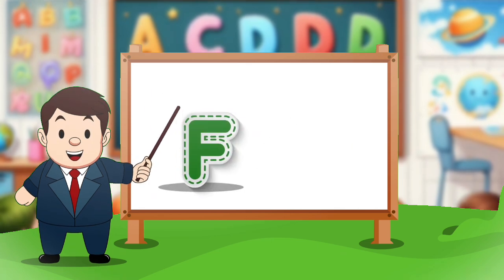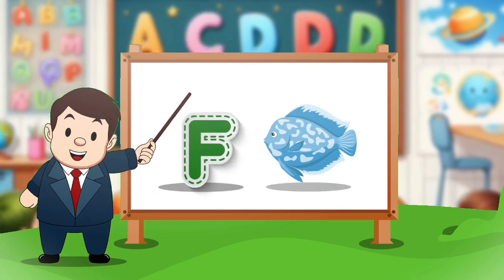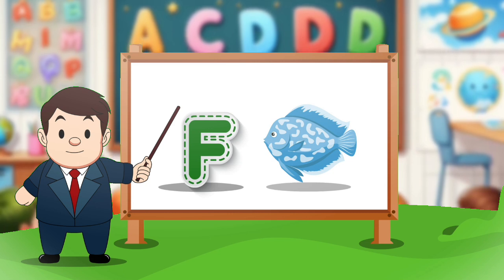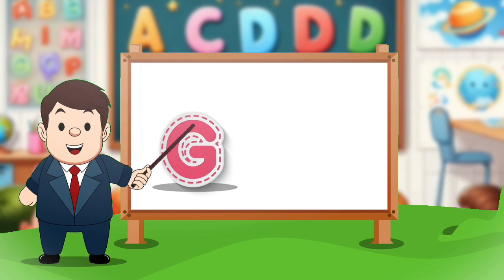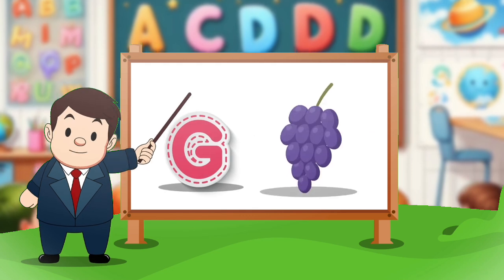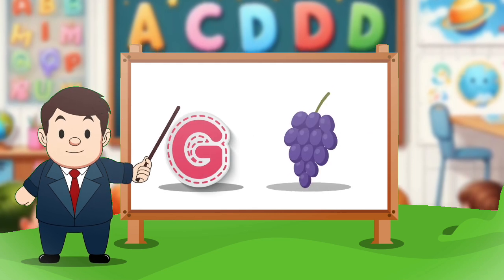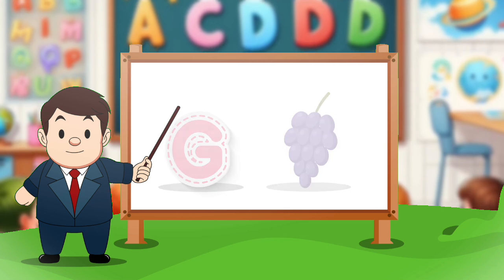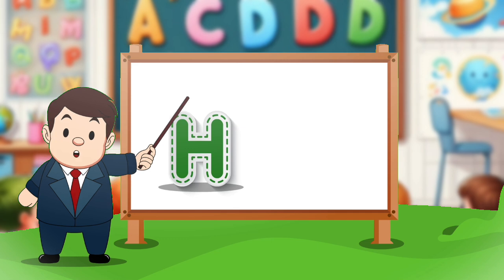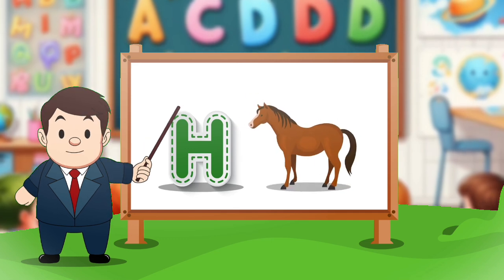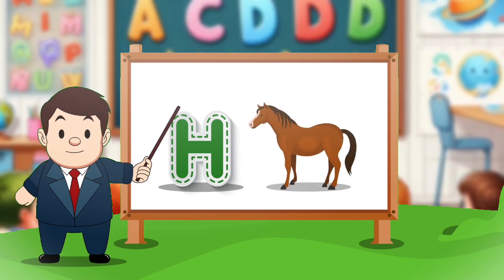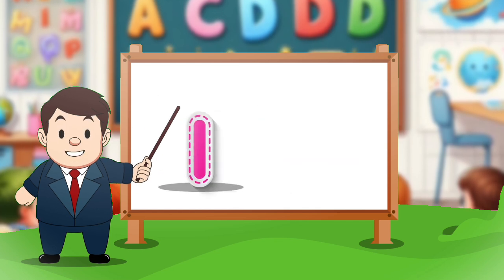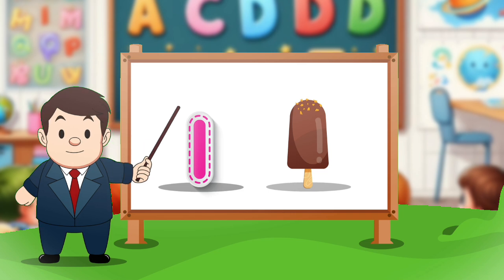F. F for face. G. G for crab. H. H for horse. I. I for ice cream.